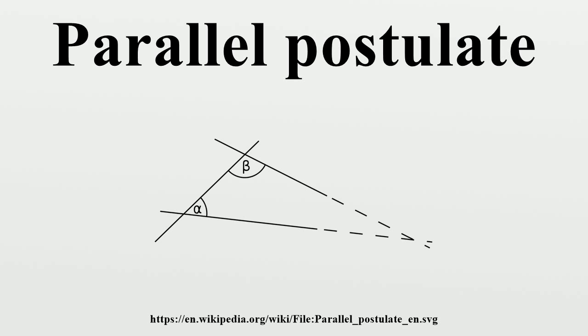A geometry where the parallel postulate does not hold is known as a non-Euclidean geometry. Geometry that is independent of Euclid's fifth postulate is known as absolute geometry.